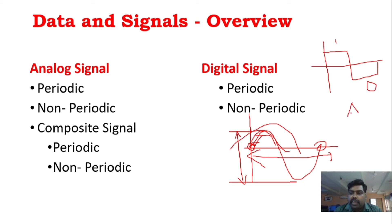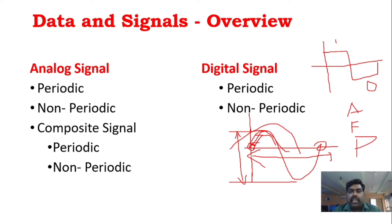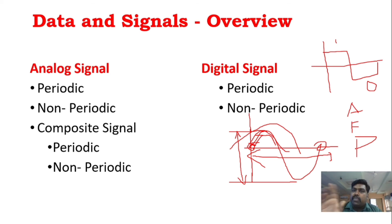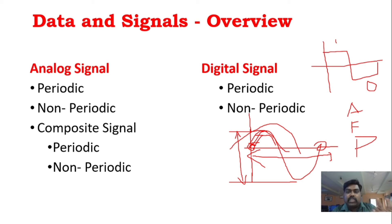The types of modulation are: amplitude, frequency, and phase. If you join a message signal to a carrier signal, the carrier will undergo changes in amplitude, frequency, and phase. That is why we say amplitude modulation, frequency modulation, and phase modulation. The message signal is the original signal.